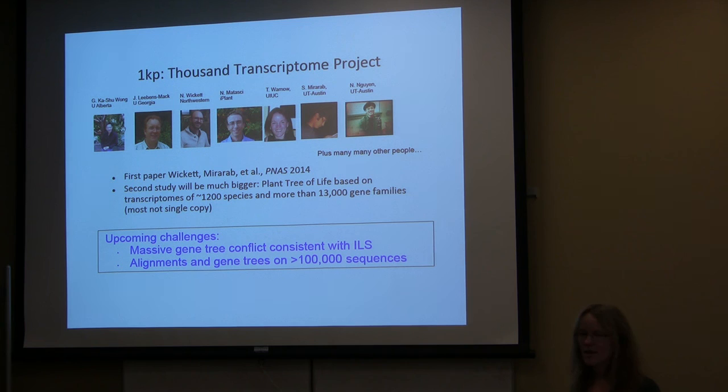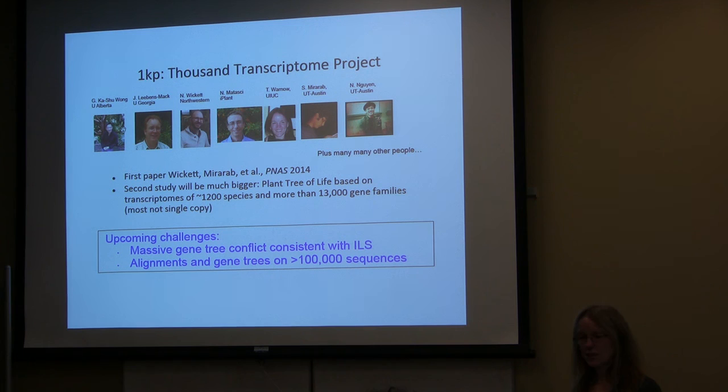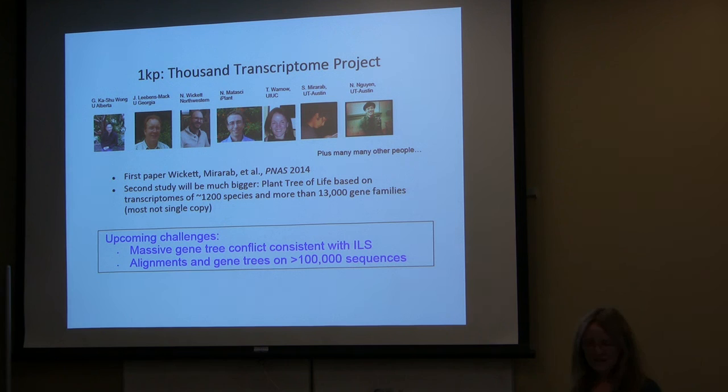The problem with the transcriptome dataset is that some genes we wanted to analyze are multi-copy, giving us more than 100,000 sequences to align. So the question is how do you make a multiple sequence alignment on more than 100,000 sequences? In a phylogeny, you're trying to answer how did life evolve for a particular set of organisms. You have to decide which organisms and which genomic markers you're interested in.